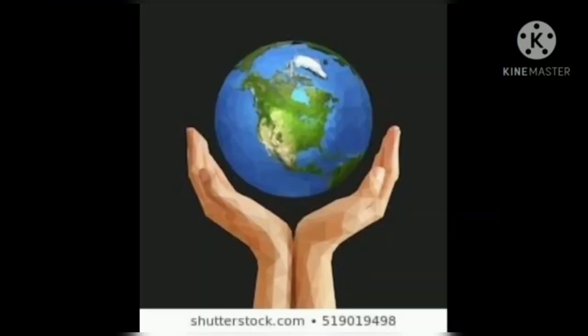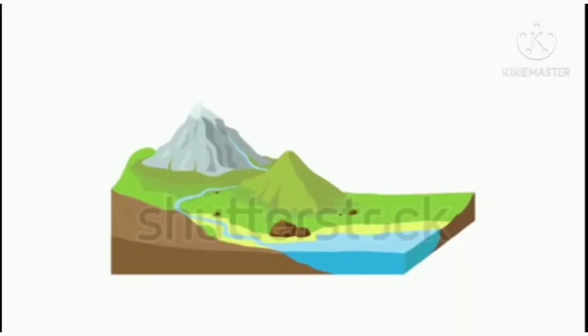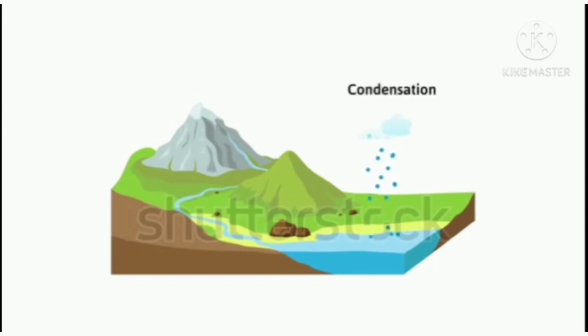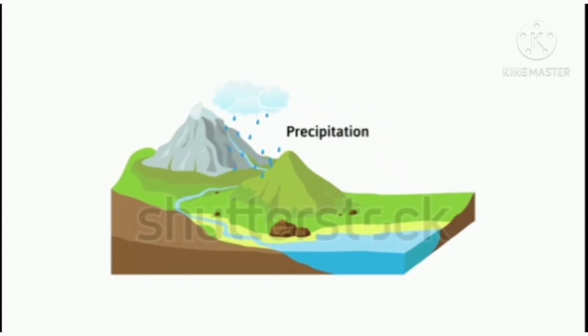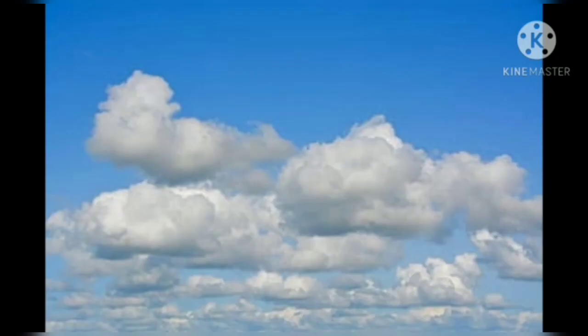Earth is a blue ball. Why is the color of the earth blue? It is because three-fourths of the earth is filled with water. This water evaporates due to the heat of the sun. The water vapor thus formed travels towards the sky. The cool air of the sky converts water vapor to water droplets, and these droplets join together and form clouds.